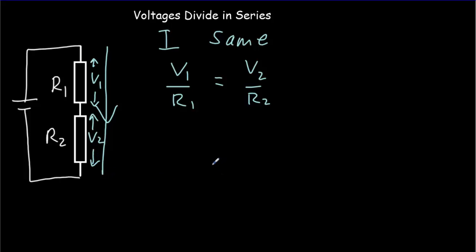The other thing we know, by Kirchhoff's loop rule, is that if the battery voltage is V, then V has to equal V1 plus V2.